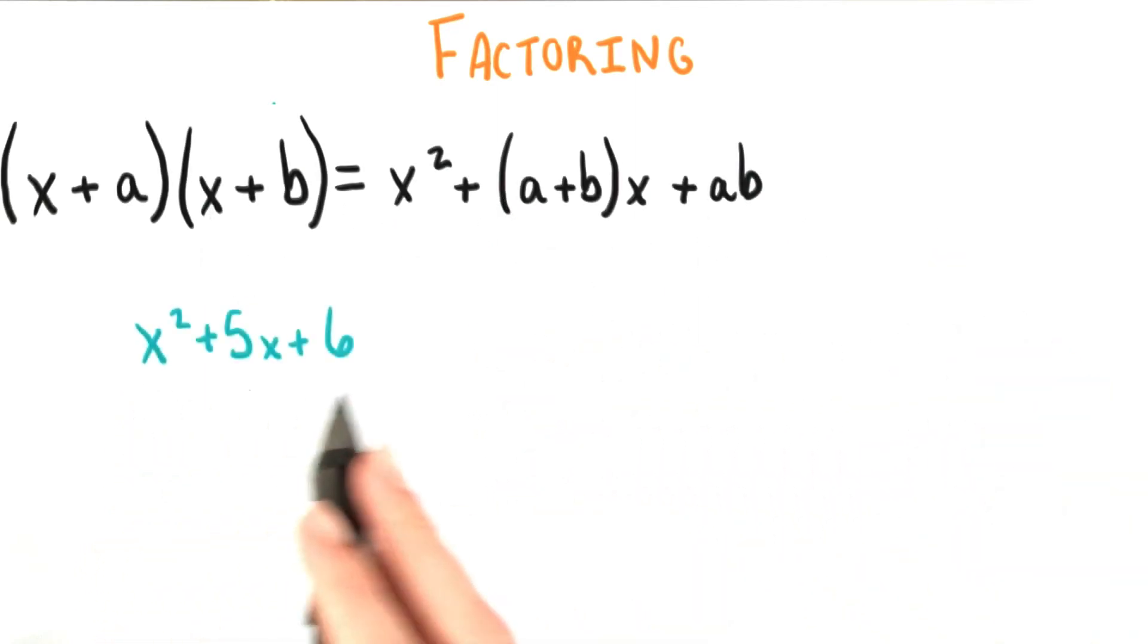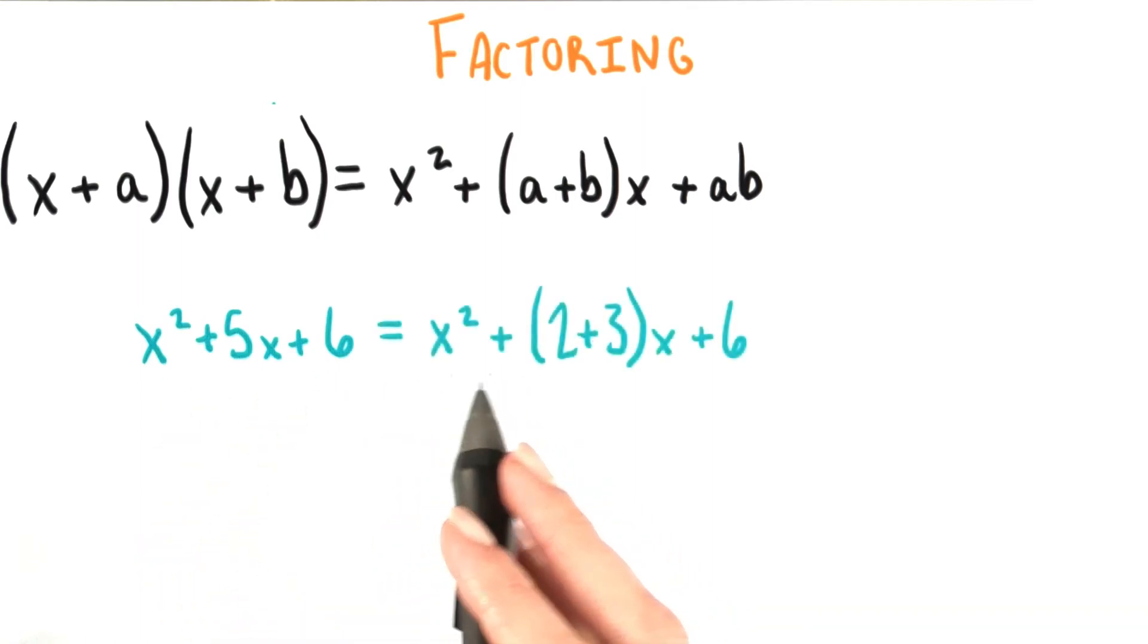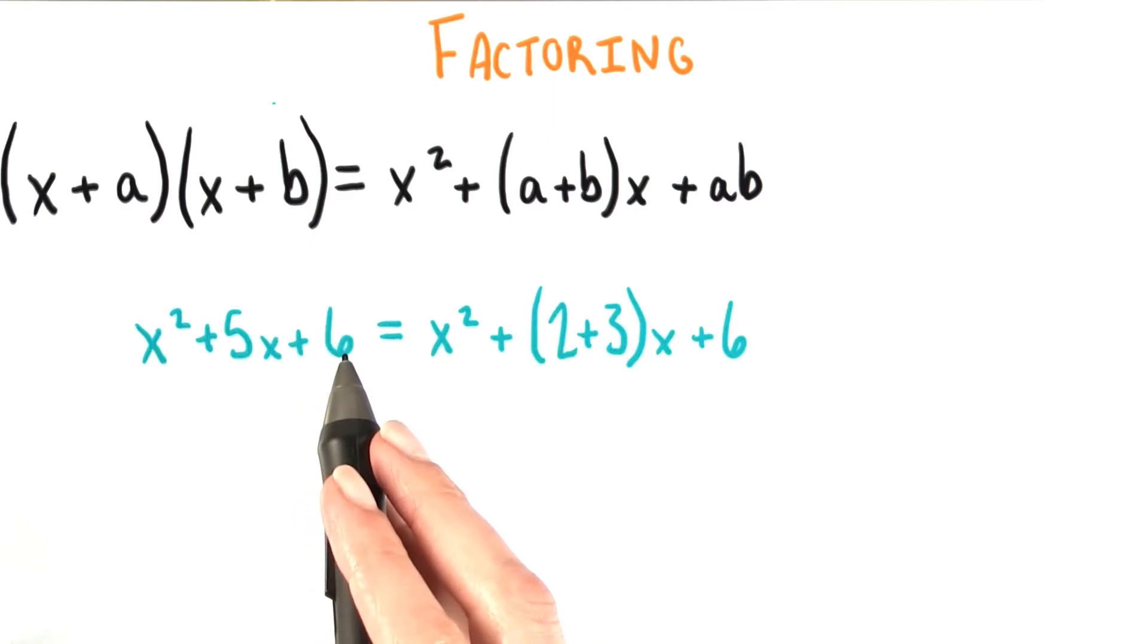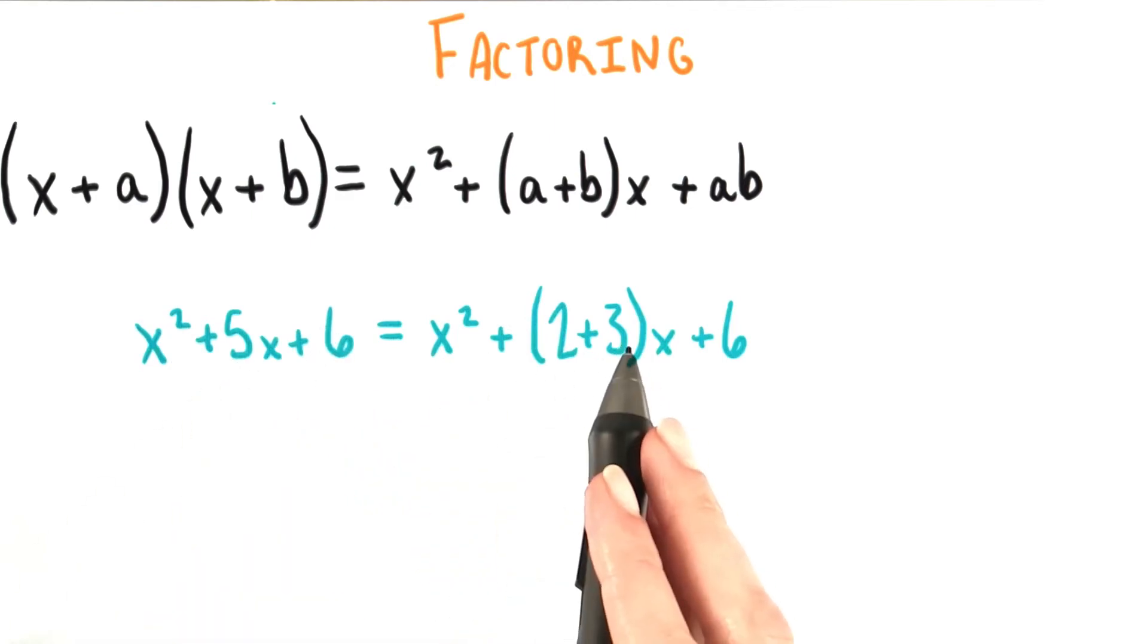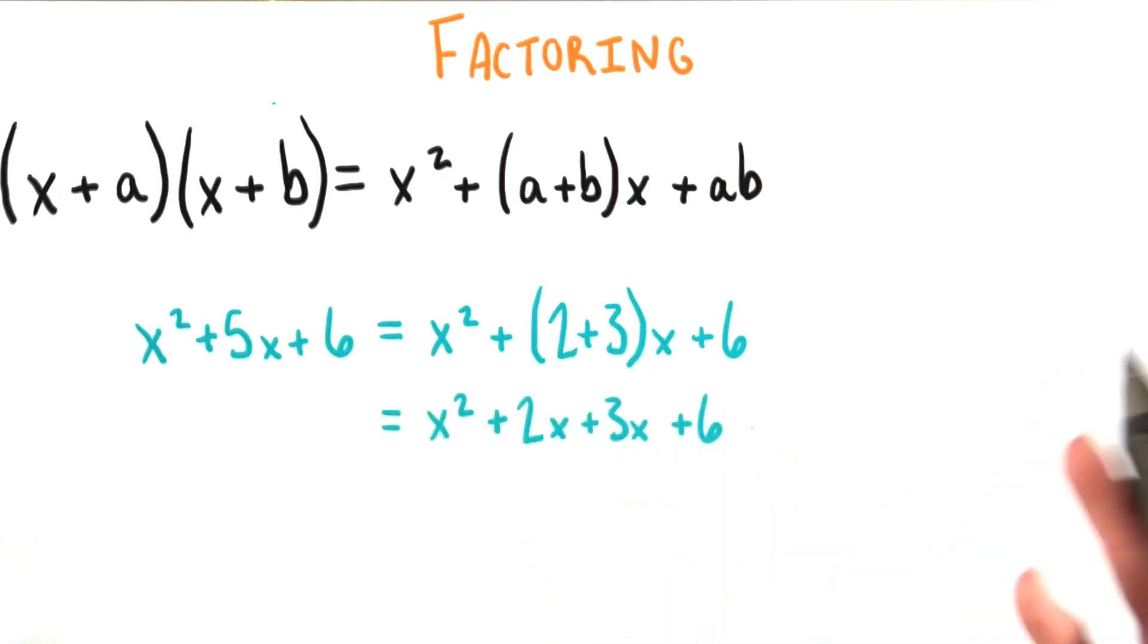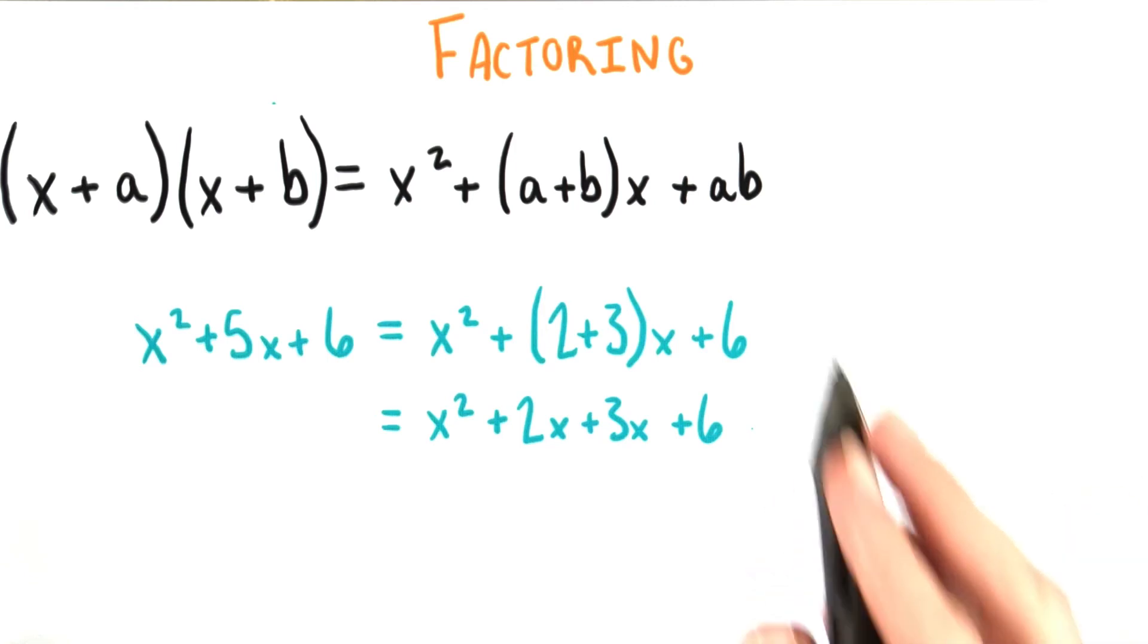Let's say we start out with a polynomial x² + 5x + 6. We know that we can rewrite this, recognizing that 2 and 3 are factors of 6 and also add equal 5 as x² + (2 + 3)x + 6, which pretty simply becomes x² + 2x + 3x + 6. Great.